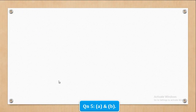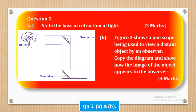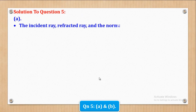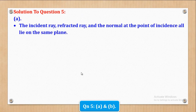Let's start with Question 5 Part A. Part A says: state the laws of refraction of light, and it gives two marks. Let's see how those two marks can be got. First of all we shall say that the incident ray, reflected ray, and the normal at the point of incidence all lie on the same plane.